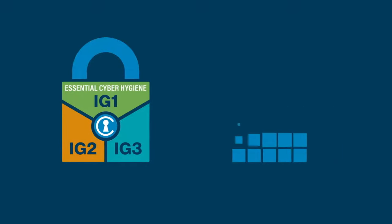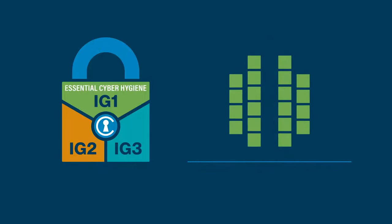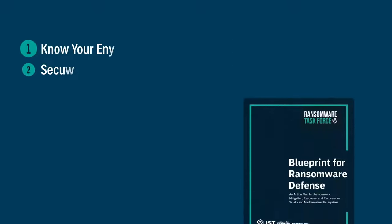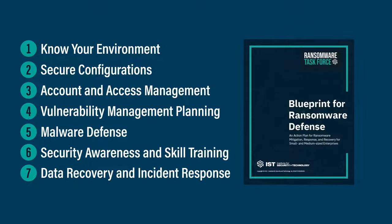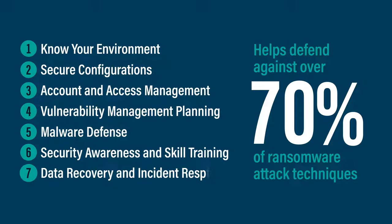The 14 foundational safeguards are the building blocks necessary to establish an enterprise's cybersecurity program. They also enable the implementation of actionable safeguards. The 26 actionable safeguards build on the foundational ones and are all about applying the technical controls needed to protect an enterprise's environment and defend against ransomware and other general non-targeted cyber attacks. Focusing on seven major areas, the blueprint helps defend against over 70% of the attack techniques associated with ransomware.